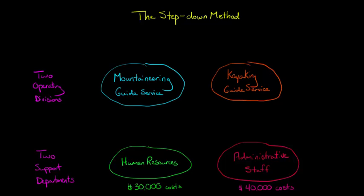In this video, we're going to talk about how to use the step-down method to allocate the cost of multiple support departments when those support departments happen to provide support to each other.